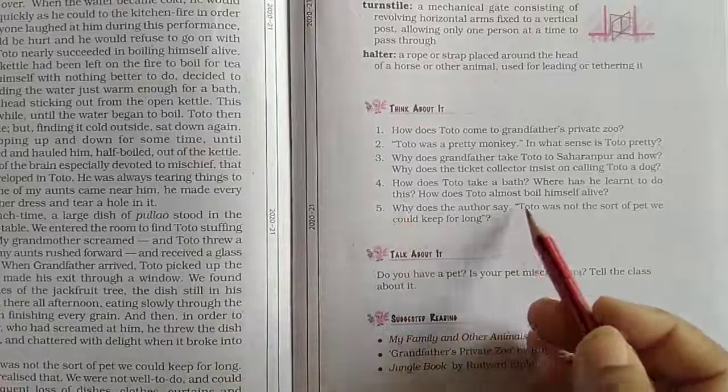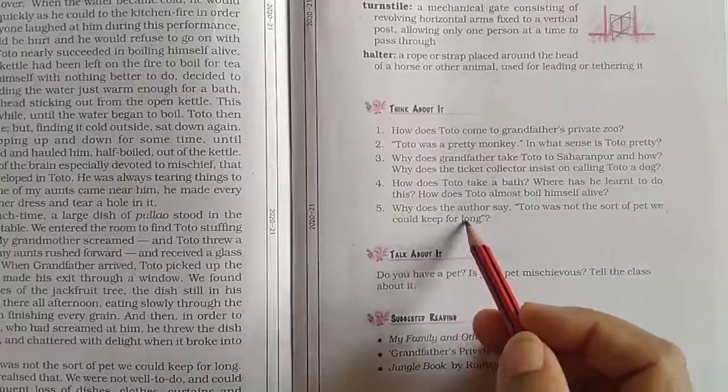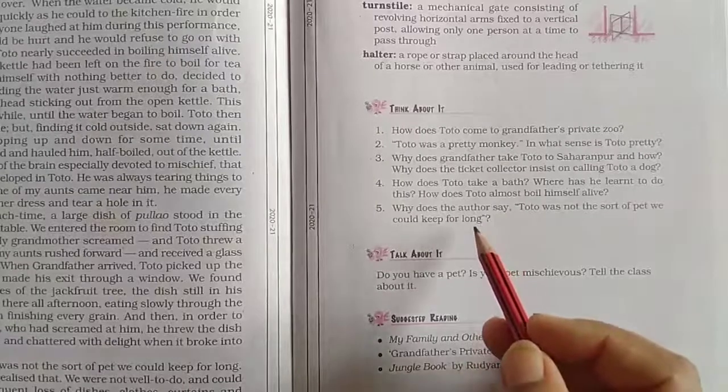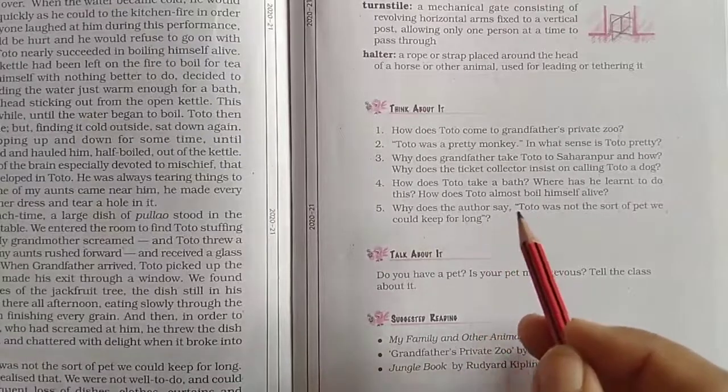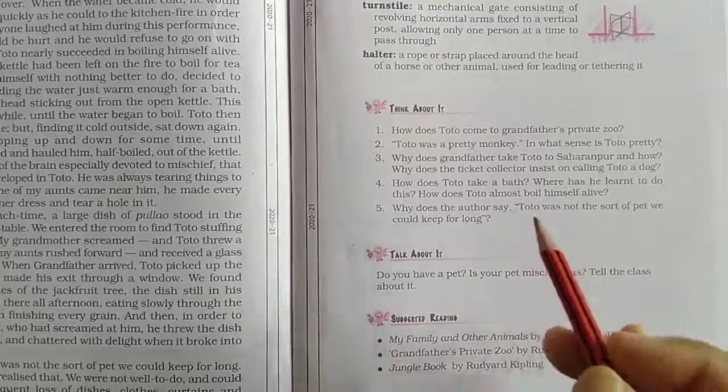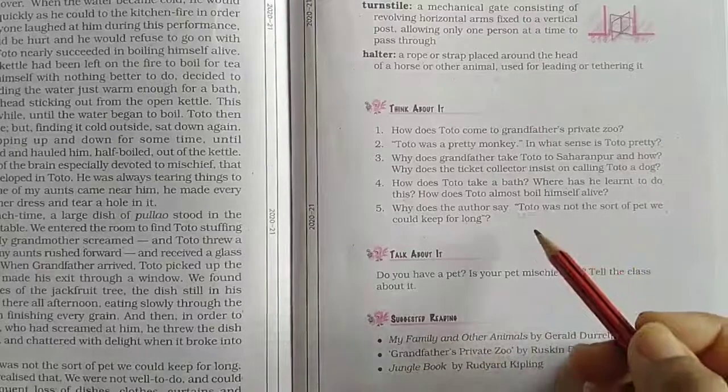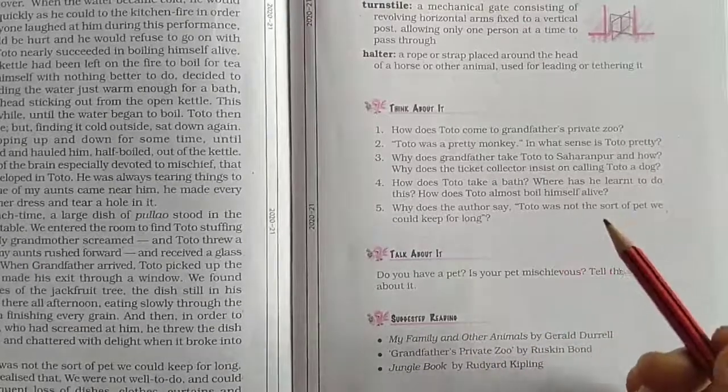Next: Why does the author say Toto was not the sort of pet we could keep for long? Because Toto was not only mischievous, but his mischiefs were very expensive for the family. He tore expensive wallpapers, dresses, broke plates, etc.